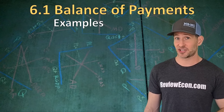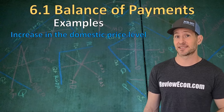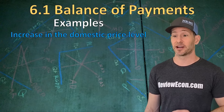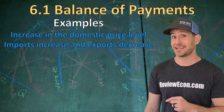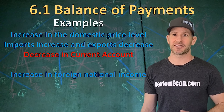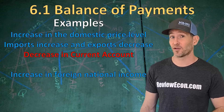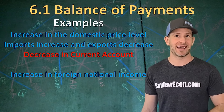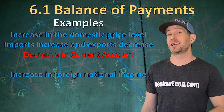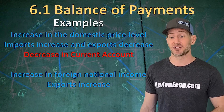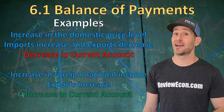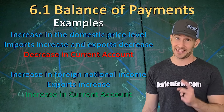Let's go over some examples of things that could change the current account. Let's say there's an increase in the domestic price level within a country. That will make domestic goods relatively more expensive than foreign goods, which will increase imports and decrease exports, causing a decrease in the current account. If, on the other hand, we saw an increase in national income with one of our foreign trade partners, the citizens within that country would purchase more goods and services, including imports from the United States, increasing our exports and our current account. Decreases of these things would cause an opposite shift.